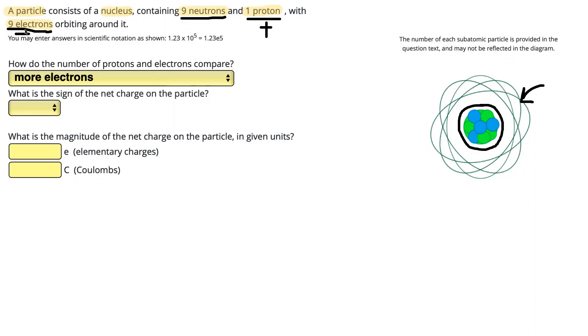As a result, the net charge is going to be negative since electrons are negatively charged, and here we have more negative charges than positive charges. So what is the sign of the net charge on the particle? It's going to be negative.